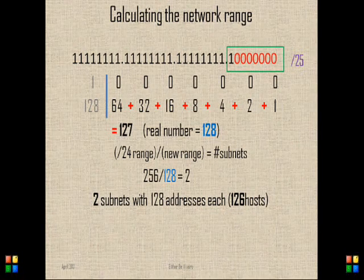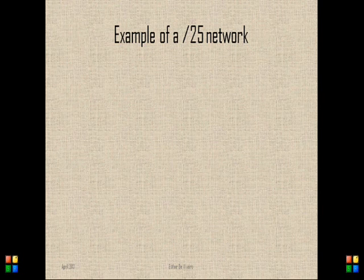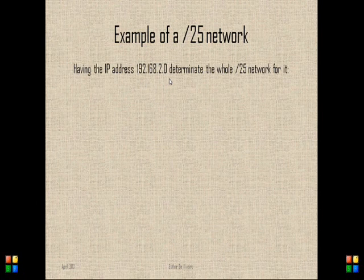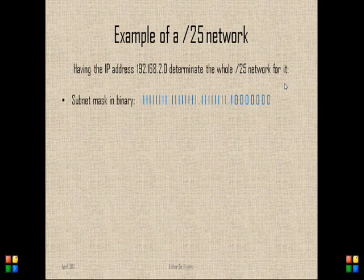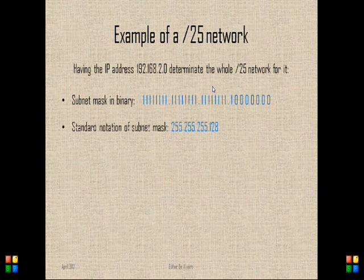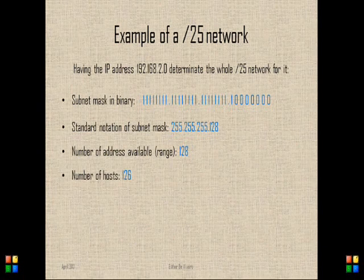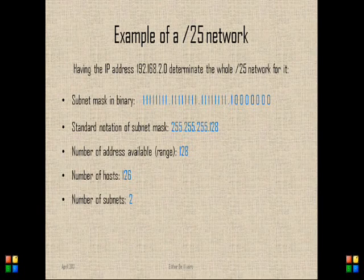Now that we found the basic information, we're going to write down the full example for the slash 25 network. Here we have a regular Class C IP address and we're going to determine the whole slash 25 network for it. First we write down the subnet mask in binary with 25 bits activated, then the subnet mask in decimal, then the range, then the number of hosts, the number of subnets, and finally we allocate the addresses for each subnet.